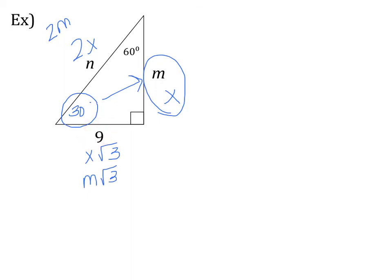So I'm going to start with 9 = m√3. I want to get m by itself, so I'm going to divide by √3. So m = 9 / √3. We are not allowed to have a square root on the bottom of a fraction, so we have to rationalize it. That means we're going to multiply by √3 / √3.